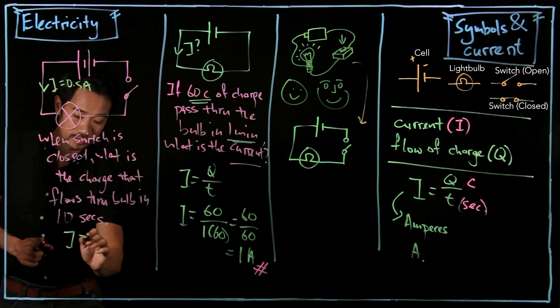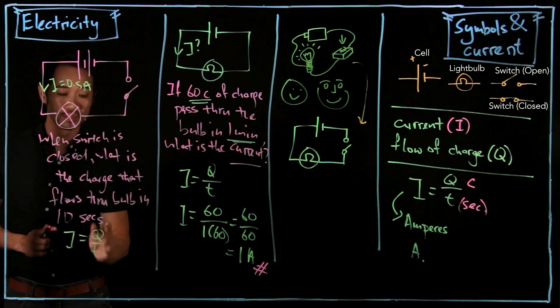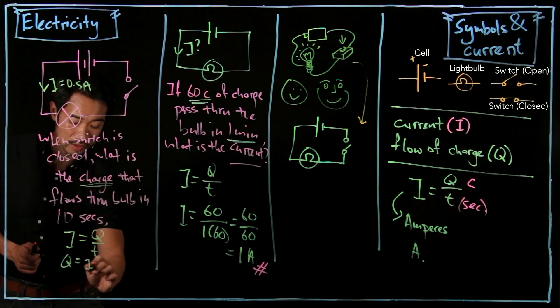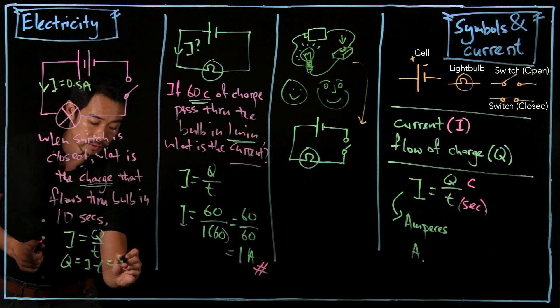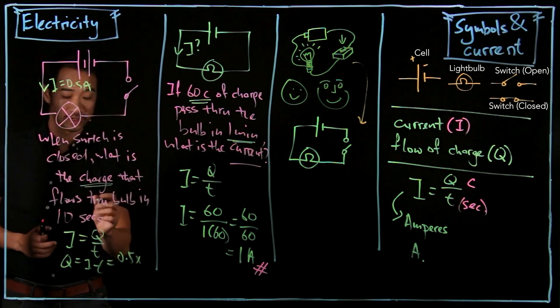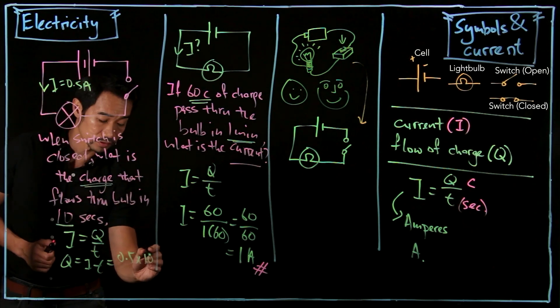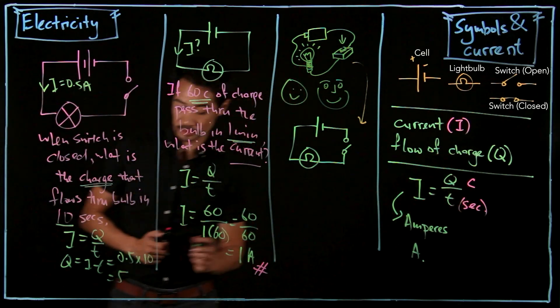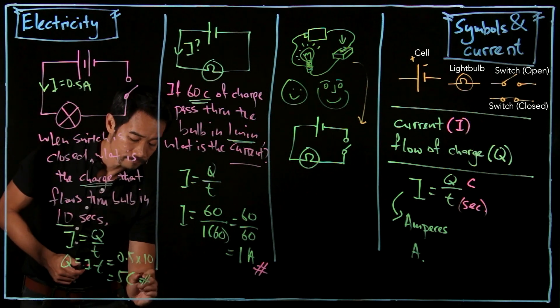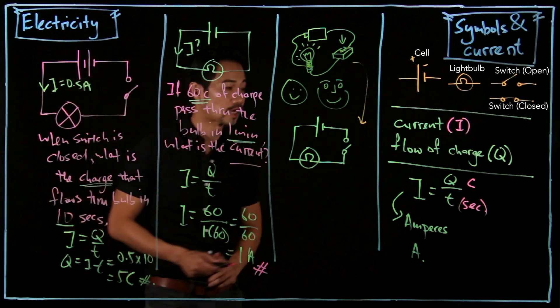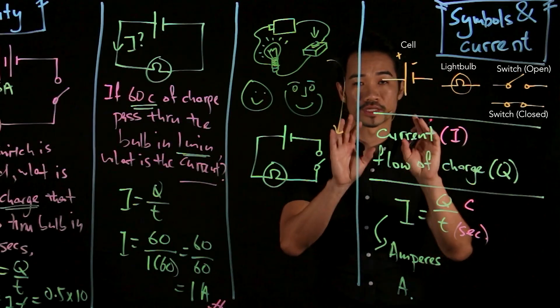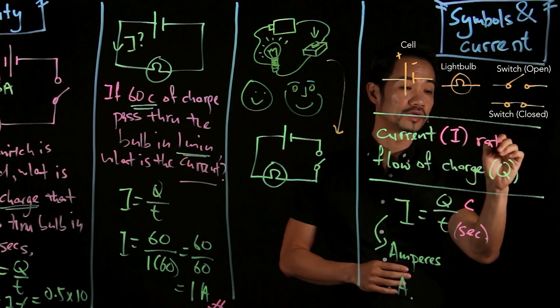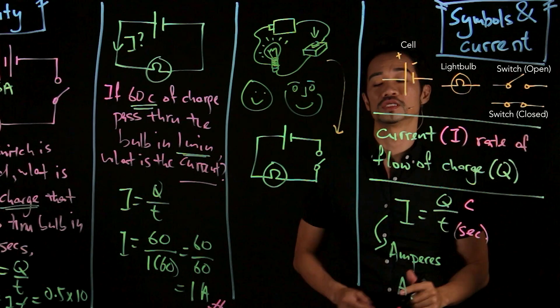I is equals to Q over T. So now the unknown is Q. So Q is equals to I T. I is 0.5 and our time is 10 seconds. So the answer is 5. And what's the unit for charge? It is in Coulombs. So that is how you apply the current formula. What is current? Current is actually the flow of charge or rate of flow of charge which is Q over T.